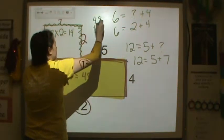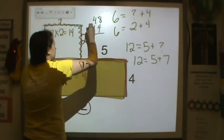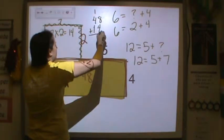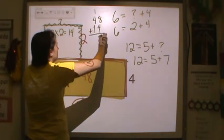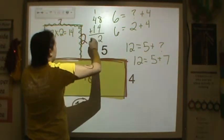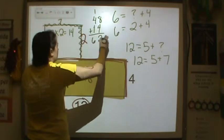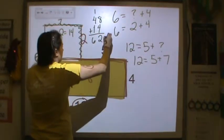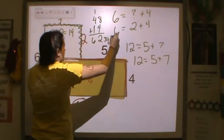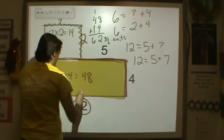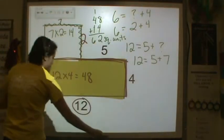48 plus 14 — if you add this together, 8 and 4 is 12, carry the 1, and you get 62 square units because you're finding area.